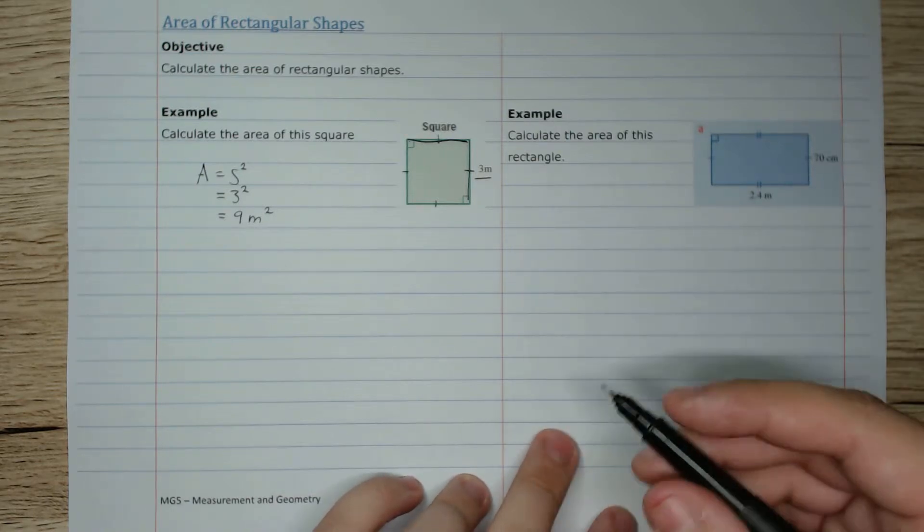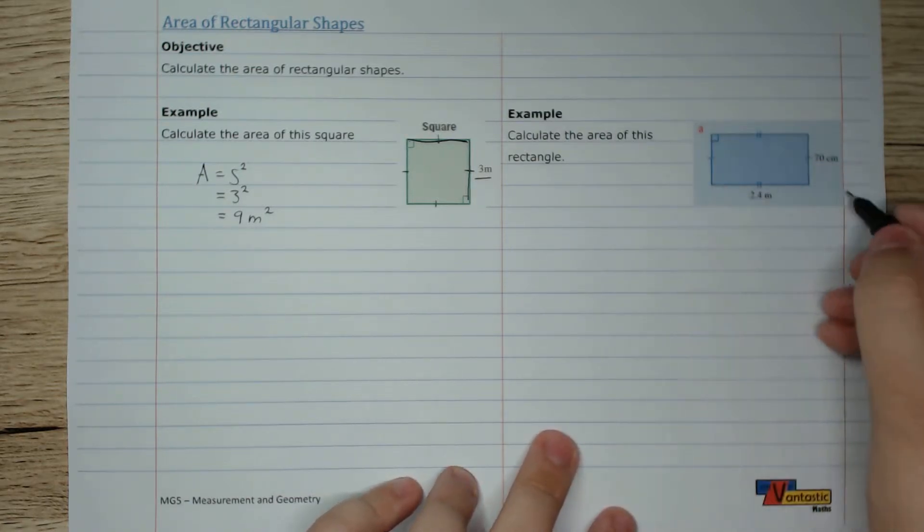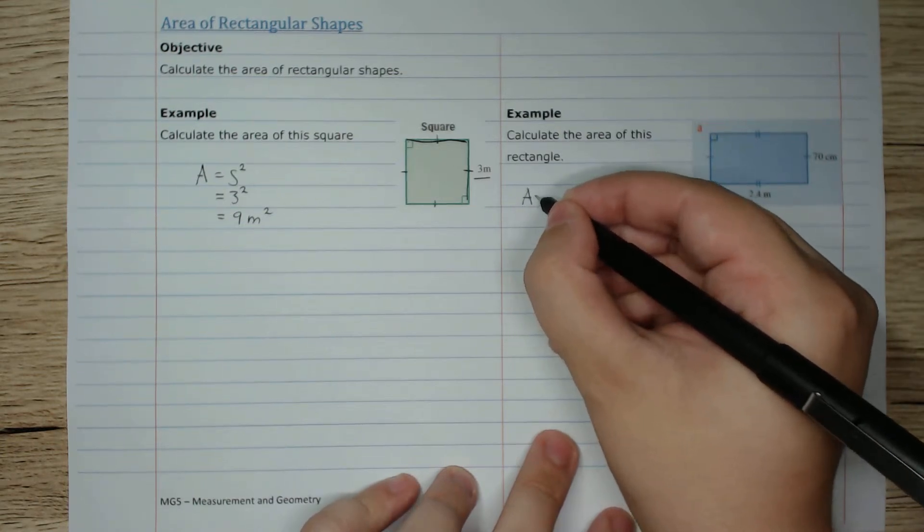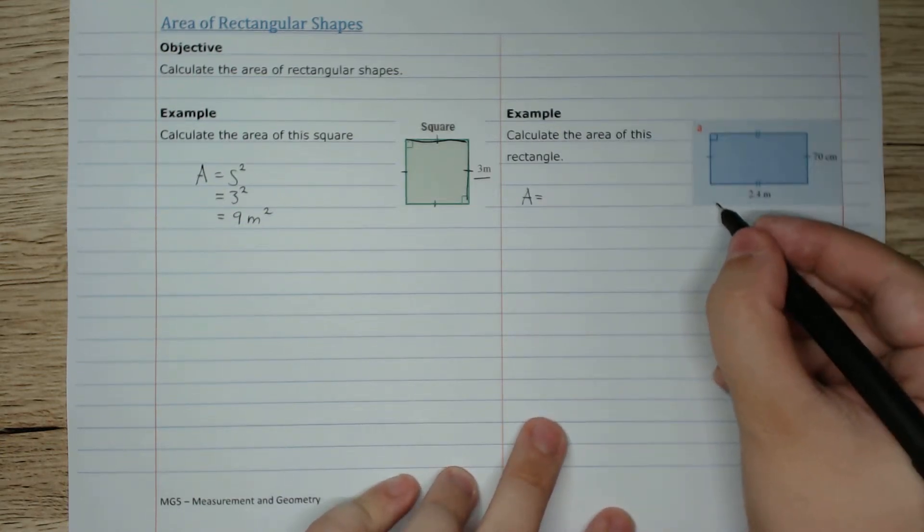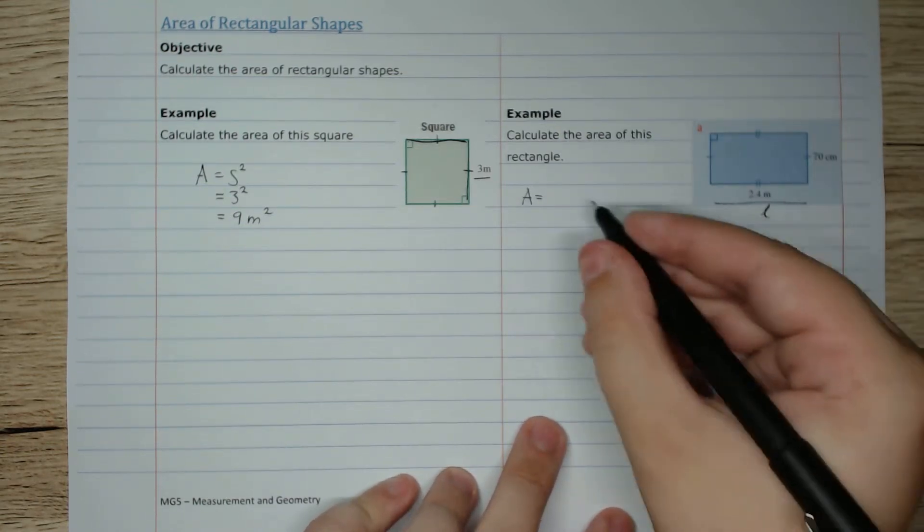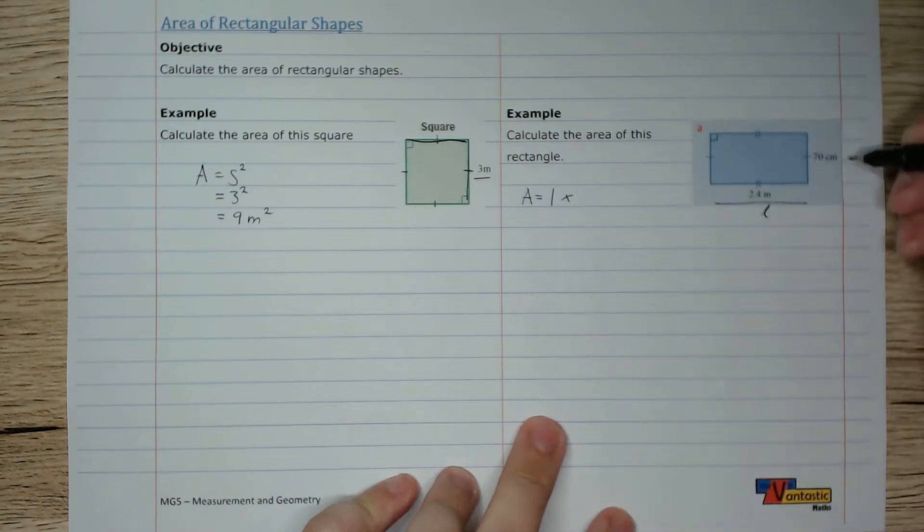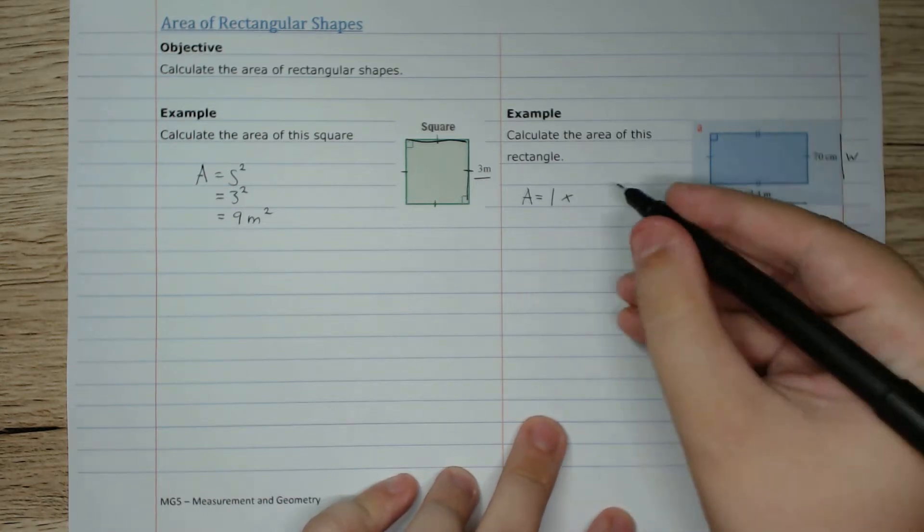For a rectangle we're going to multiply the two side lengths. So area equals, we're going to use the length, L, times the width, W.